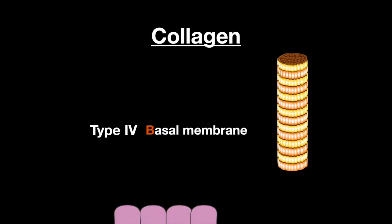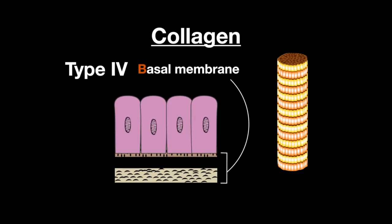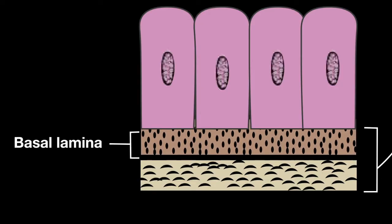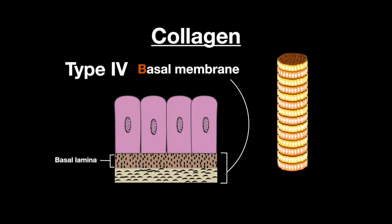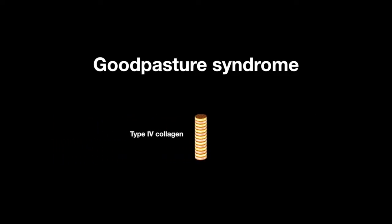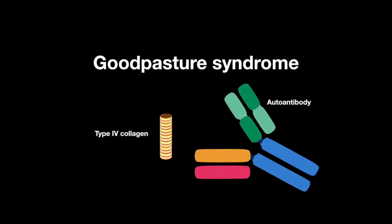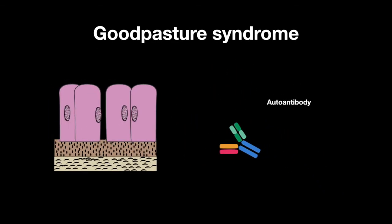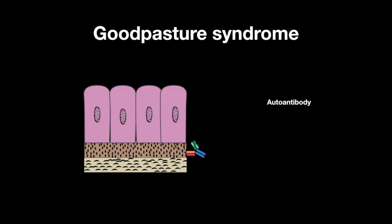Type 4 collagen composes the basement membrane — more specifically, the basal lamina, which is the layer of the extracellular matrix secreted by the epithelial cells it sits on. Remember that type 4 is under the floor. In Alport syndrome, type 4 collagen is defective, and in Goodpasture syndrome, host cells target type 4 collagen via autoantibodies, destroying the basement membrane.